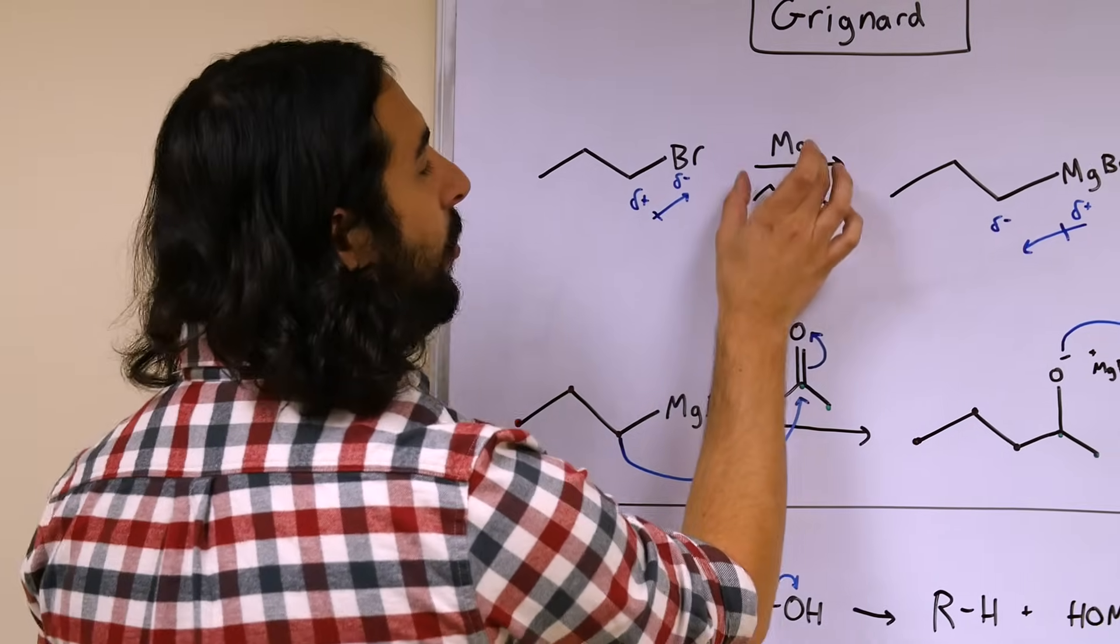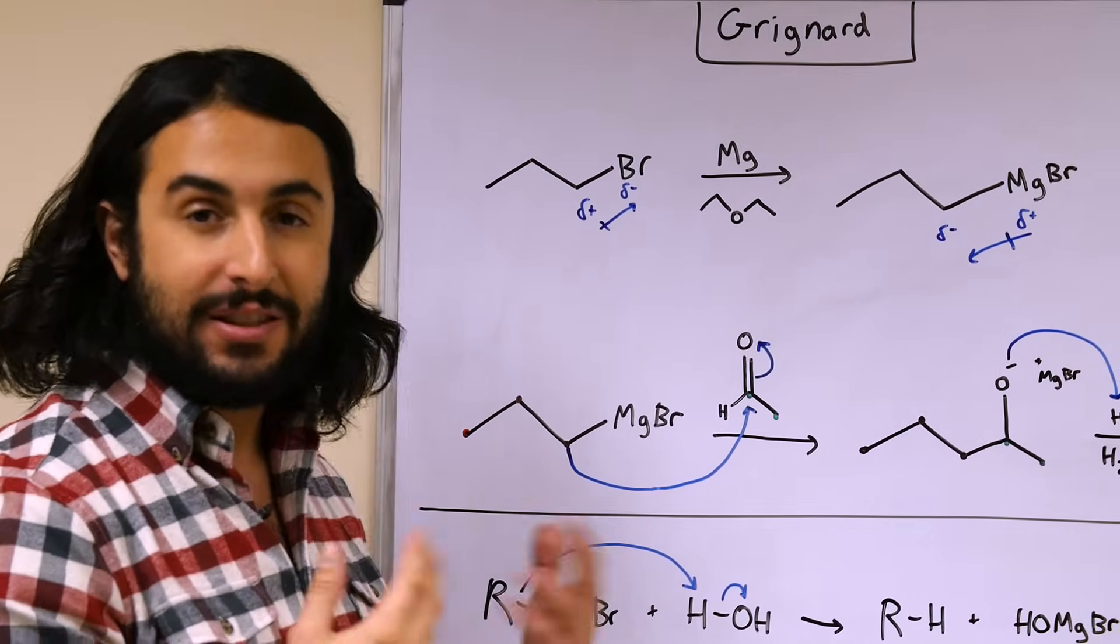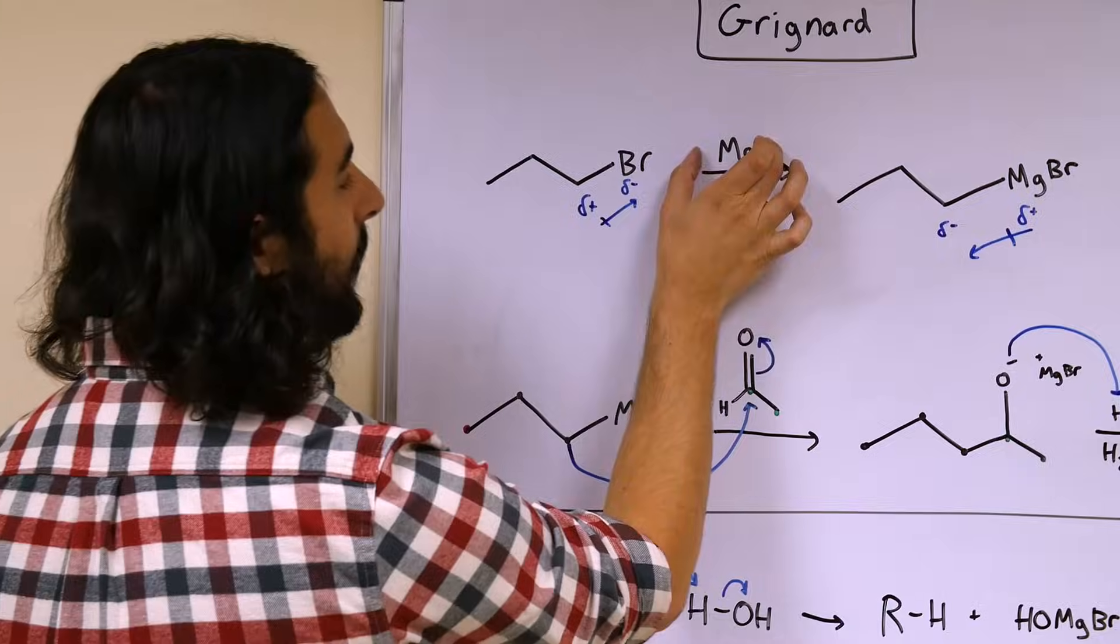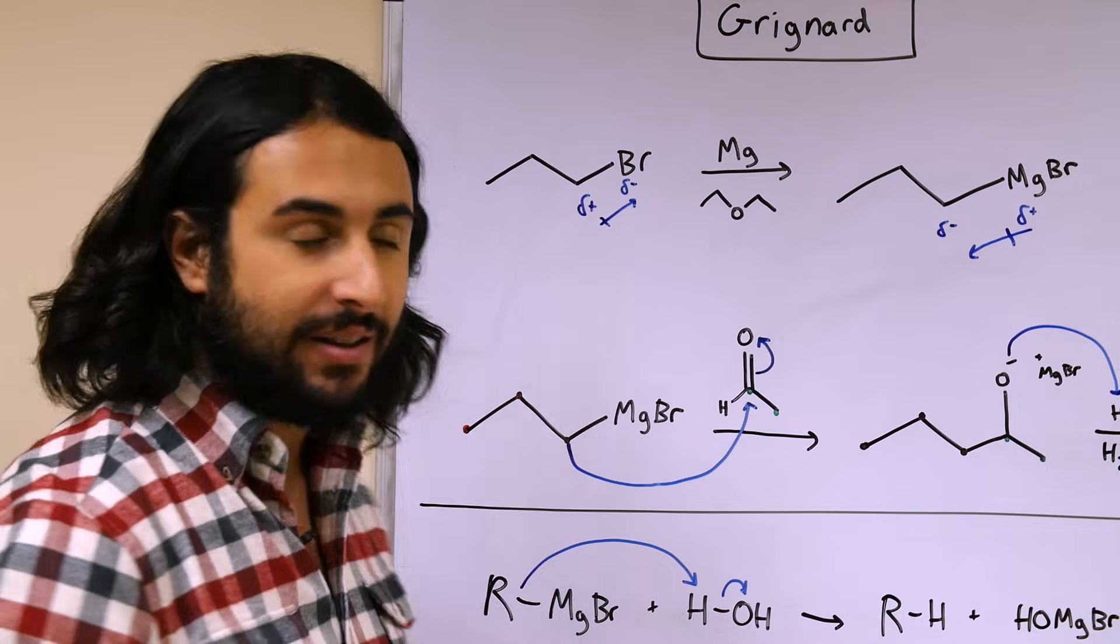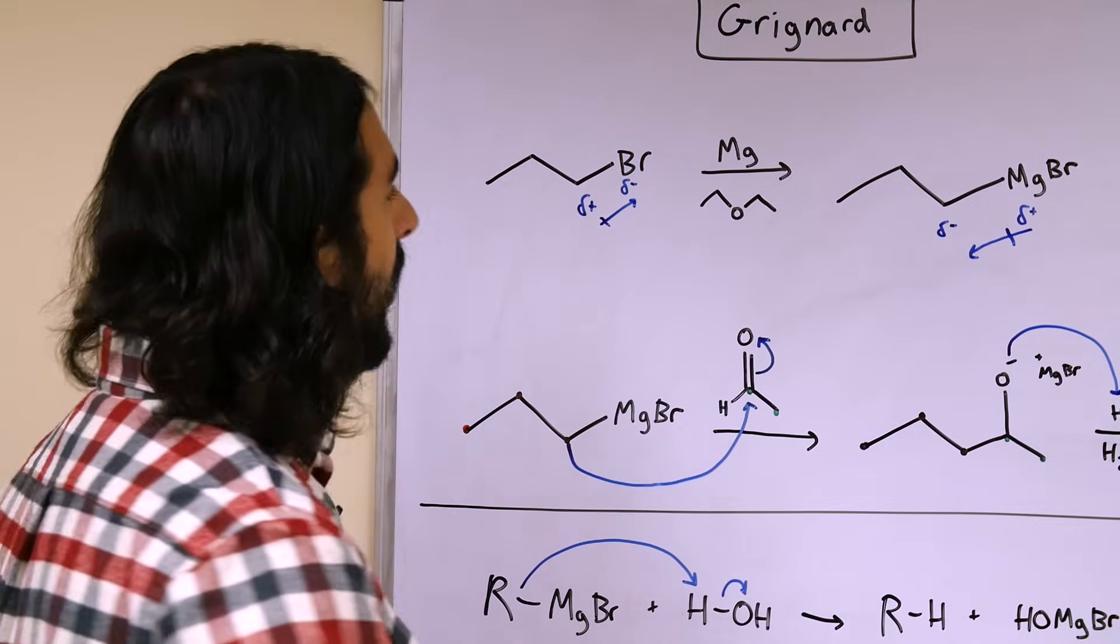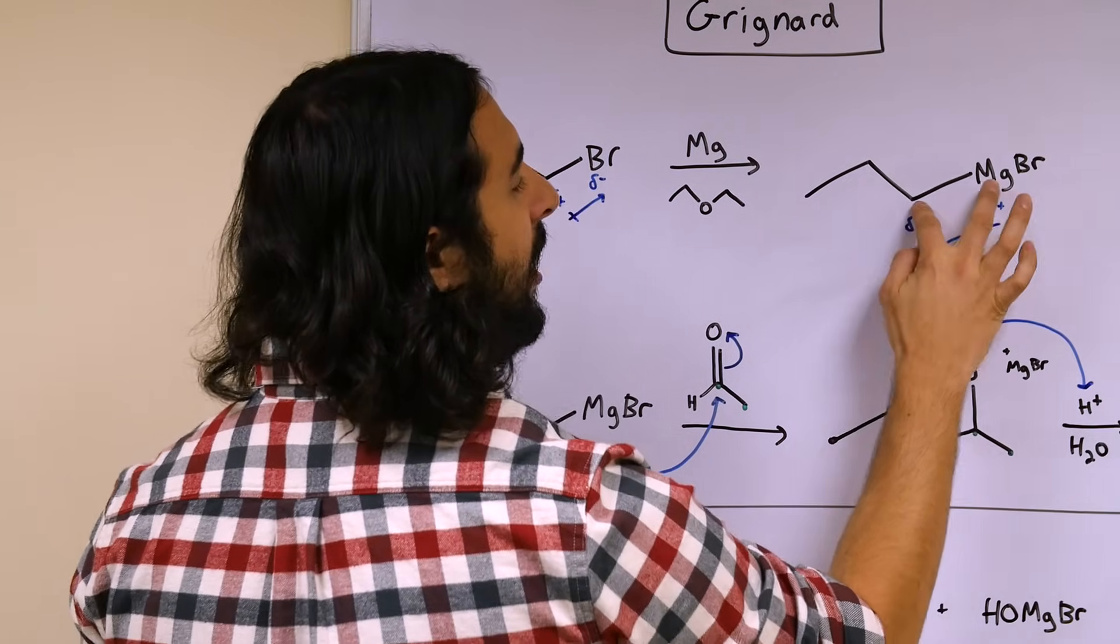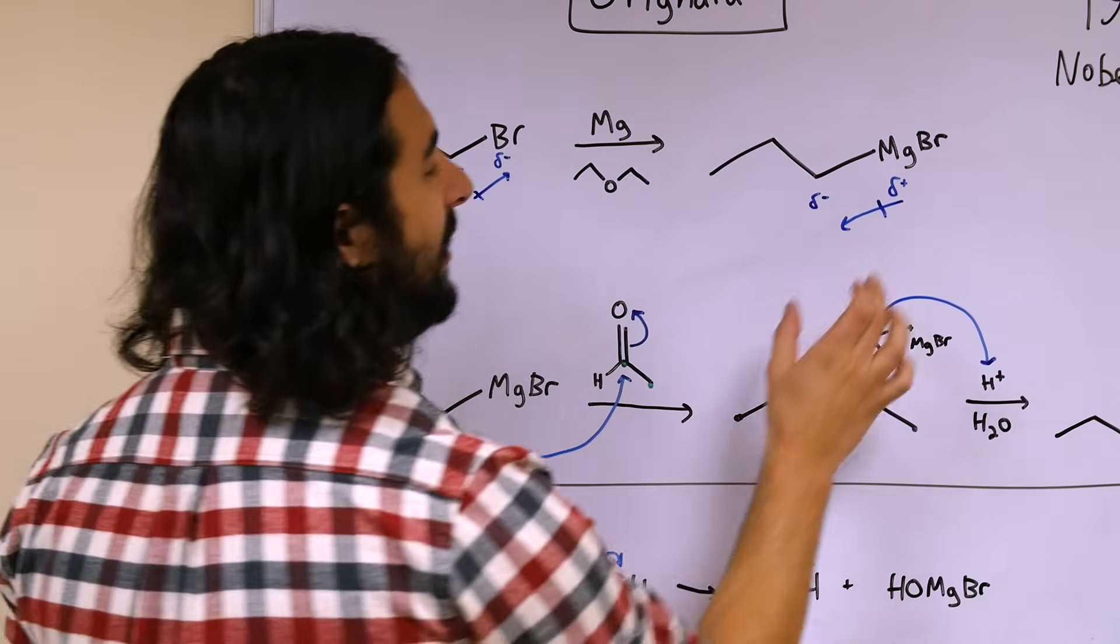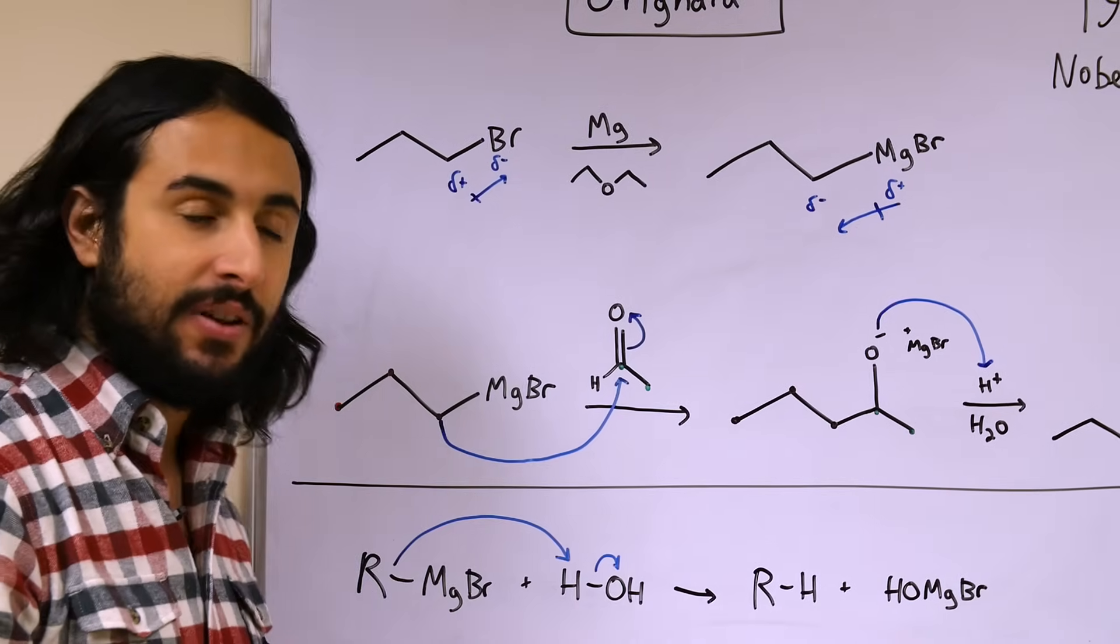Now what Grignard discovered was that this interacts with magnesium in a very interesting way in anhydrous conditions. Diethyl ether is the typical solvent for the Grignard reaction. And so magnesium is able to insert itself into the carbon-halogen bond. So this works for alkyl bromides, we can use alkyl chlorides as well. So now we have carbon connected to magnesium which is connected to bromine. And now what that does that's interesting is it actually inverts the polarity of that bond because magnesium is actually less electronegative than carbon.